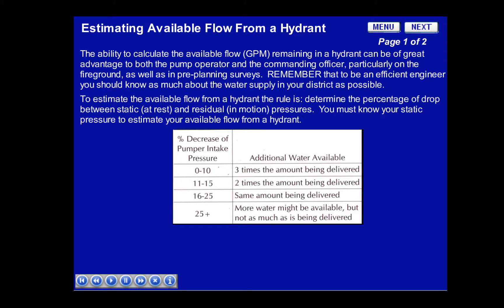This chart shows additional water available using the percentage of loss from the intake pressure. For instance, if you have a 10% or less loss — which is the difference between the static and residual pressure — you'll be able to supply three more like volumes as the original line. If you have a loss of 11 to 15%, you will only be able to allow for two more like volumes. And if you have a loss between 16 and 25%, you'll be able to deliver the same amount of water through your original line. If you have a loss greater than 25%, more water might be available, but not as much as being delivered.